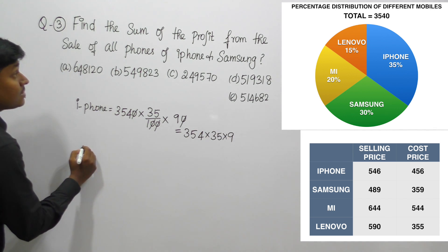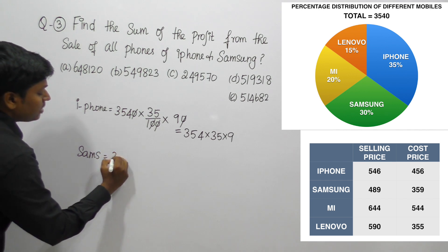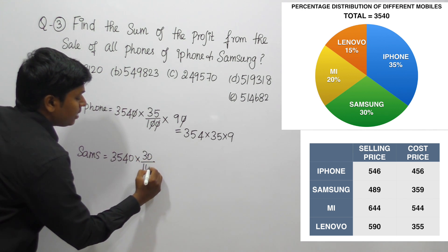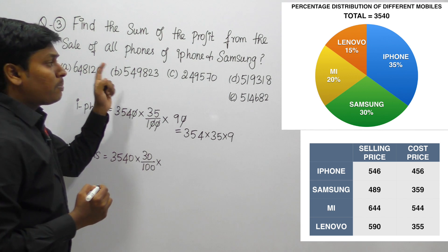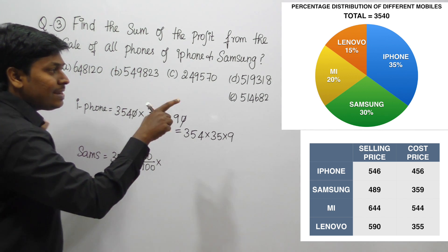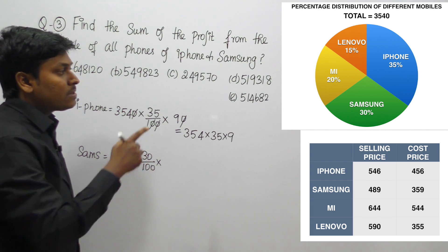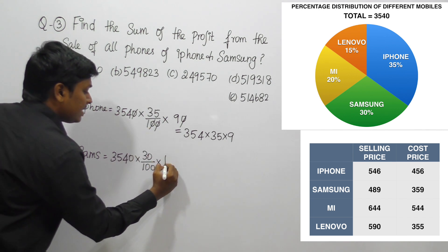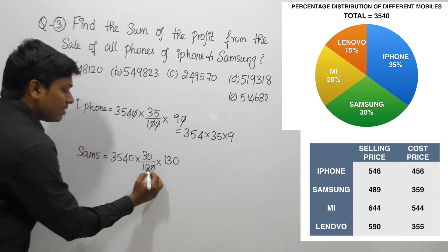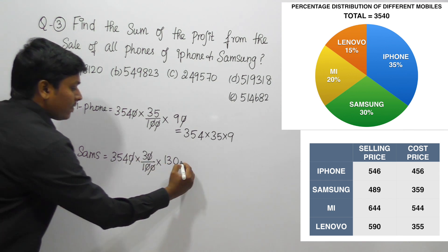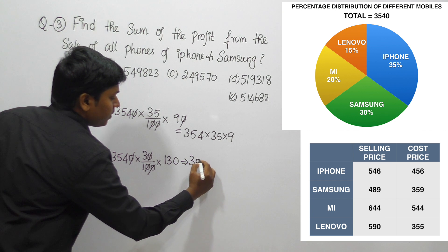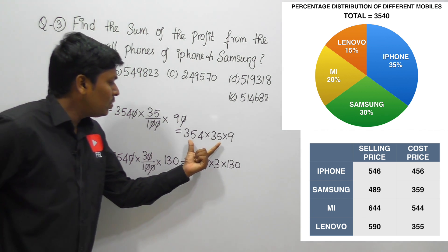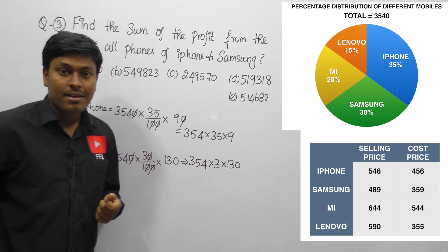For Samsung: out of 3540, Samsung is 30%. The selling price is 489 and cost price is 359, so profit per Samsung phone = 489 − 359 = 130. Samsung profit = 3540 × 30/100 × 130 = 354 × 3 × 130. Both expressions involve large multiplications.